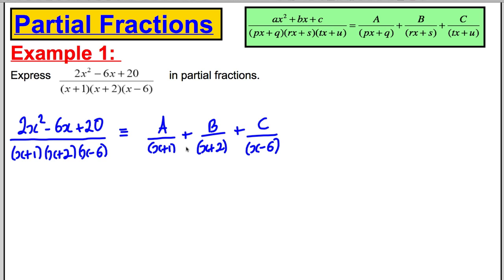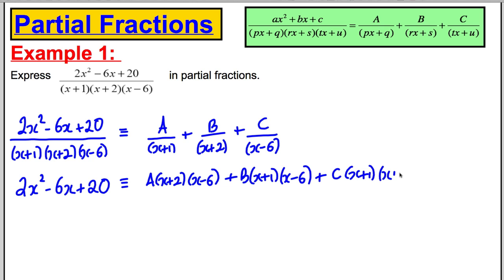Now if we were to make the two sides have the same denominator, we would end up with the following identity which I'm sure from the previous videos you'll understand where this comes from. We would have (2x² - 6x + 20) must be identical to A multiplied by these factors (x + 2)(x - 6) plus B multiplied by these factors (x + 1)(x - 6) plus C multiplied by these factors (x + 1)(x + 2).